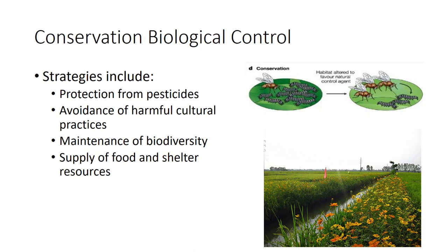Conservation biological control is another broad strategy that aims to protect and enhance the activities of natural enemies and reduce the effects of pests. In some ecosystems, this may involve preservation of existing natural enemies through practices that minimize disruption to ecological processes, including reducing or ceasing insecticide use that interferes with predators or parasitoids.